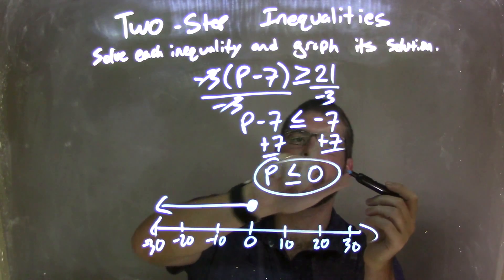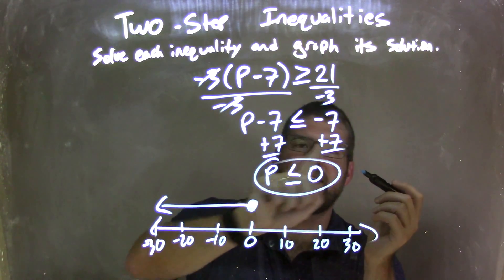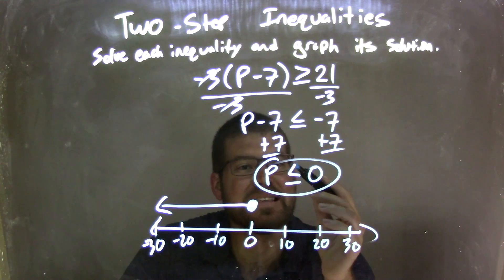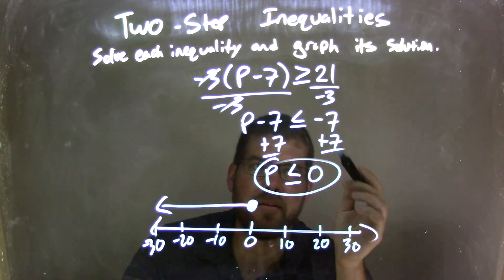Giving me a P minus 7 is less than or equal to a negative 7. So now I added a 7 on both sides, getting P by itself. And so P is less than or equal to 0, negative 7 plus 7 is 0.